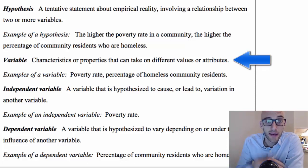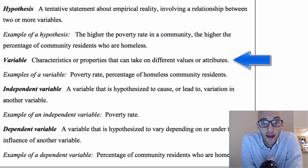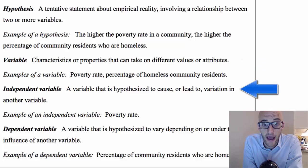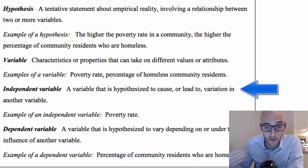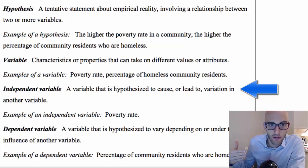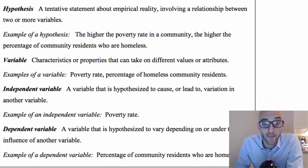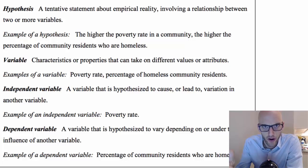Variables are characteristics or properties that take on different values and attributes — for example, poverty rate, percentage of homelessness, community residents. The independent variable is hypothesized to cause or lead to variation in another variable — in this example, poverty rate. The dependent variable depends on the independent variable — in this case, the percentage of community residents who are homeless. Hopefully you've heard these terms before, but the text will help build your understanding further.